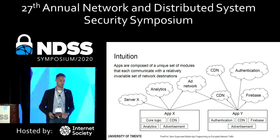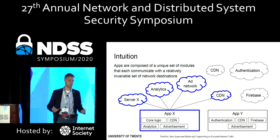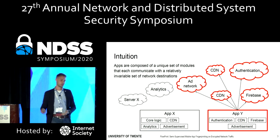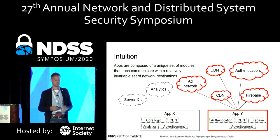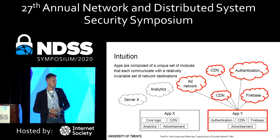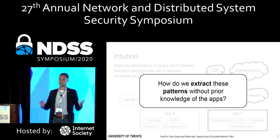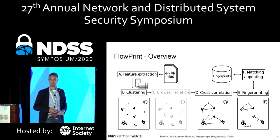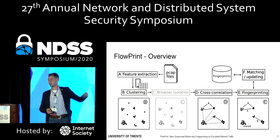But of course, the applications don't communicate with just one server — they communicate with many servers. The idea is that the combination of servers or services they communicate with is unique to the application. So if we see a certain collection of network destinations, we can distill that application X is active, and if we see another collection, we can guess that application Y is active. That's the core intuition of our work. To extract these patterns, we have developed FlowPrint, where we basically go from raw network data to fingerprints of the different applications.